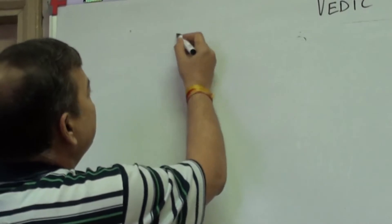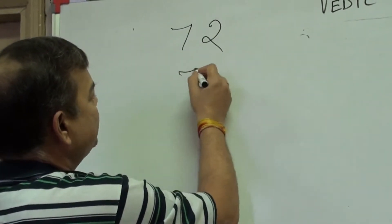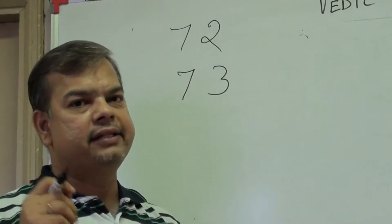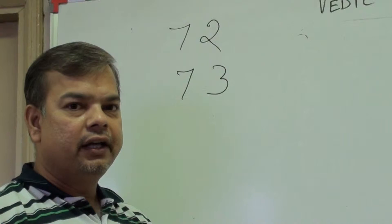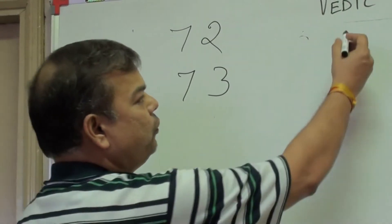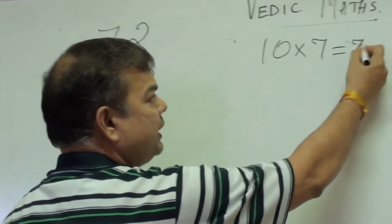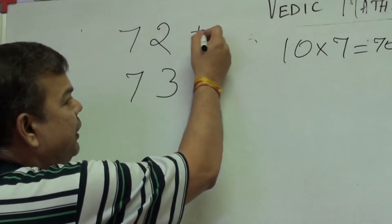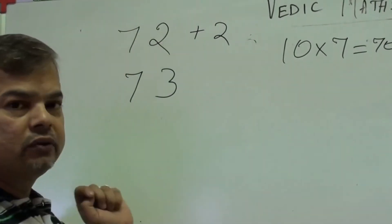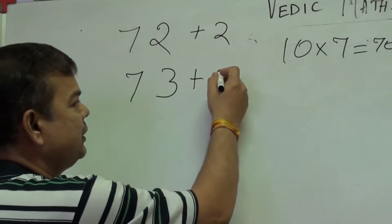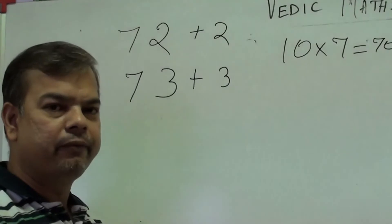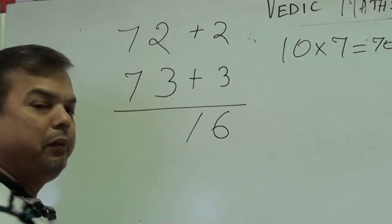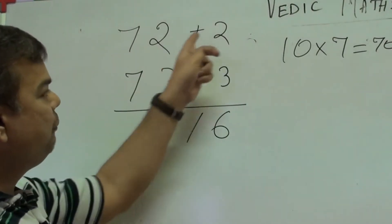Now let us take another example: 72 × 73. I will take base not as 10 but as 70. To get 70 I multiply 10 by 7, so the multiplier is 7. With base 70: 72 is written as 72 + 2 (subtract 70 from 72), and 73 is written as 73 + 3 (subtract 70 from 73). Multiply the differences: 2 × 3 = 6.